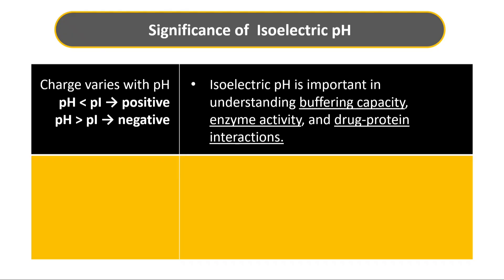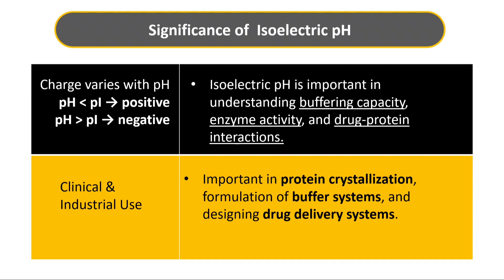The third point is drug-protein interactions. Drugs often bind to plasma proteins such as albumin and globulins, and the binding affinity depends on the charge present on both the drug and the protein. For example, albumin has an isoelectric pH of 4.7, so at physiological pH it carries a negative charge, which favors binding to positively charged drugs. Finally, the clinical and industrial uses of isoelectric pH include protein crystallization, formulation of buffer systems, and designing drug delivery systems.